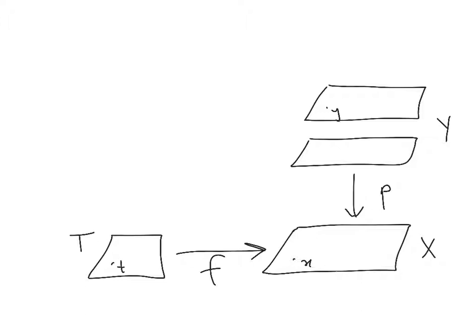Now I'll give a construction of the map F̃. We've assumed F̃ sends little t to y, so let's start by defining it that way. To define it everywhere else: I pick another point T′ in T, and pick a path from t to T′, which I can do because T is path-connected — that was one of the two assumptions on the space T.